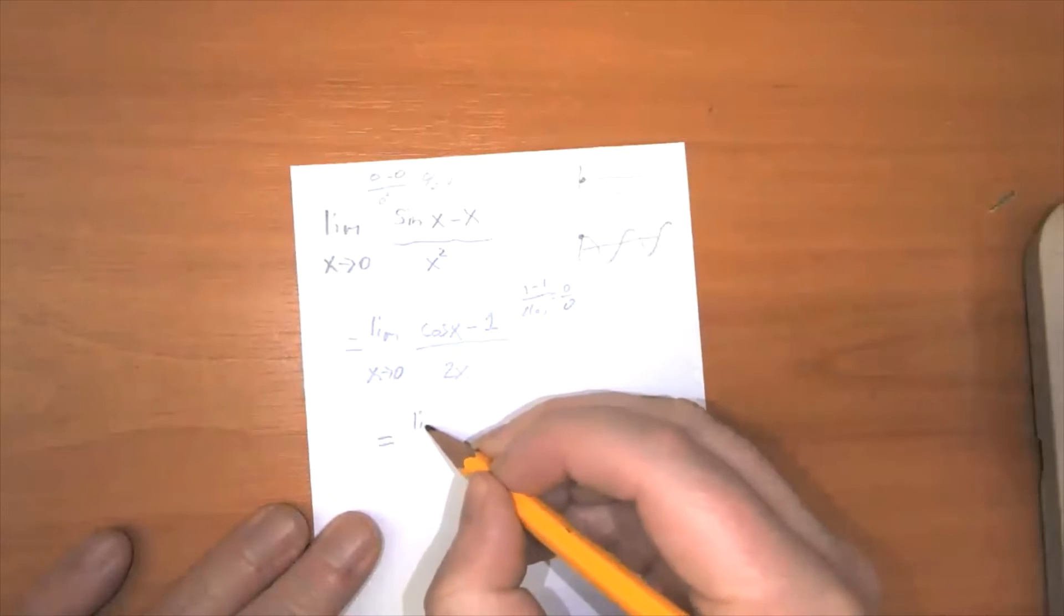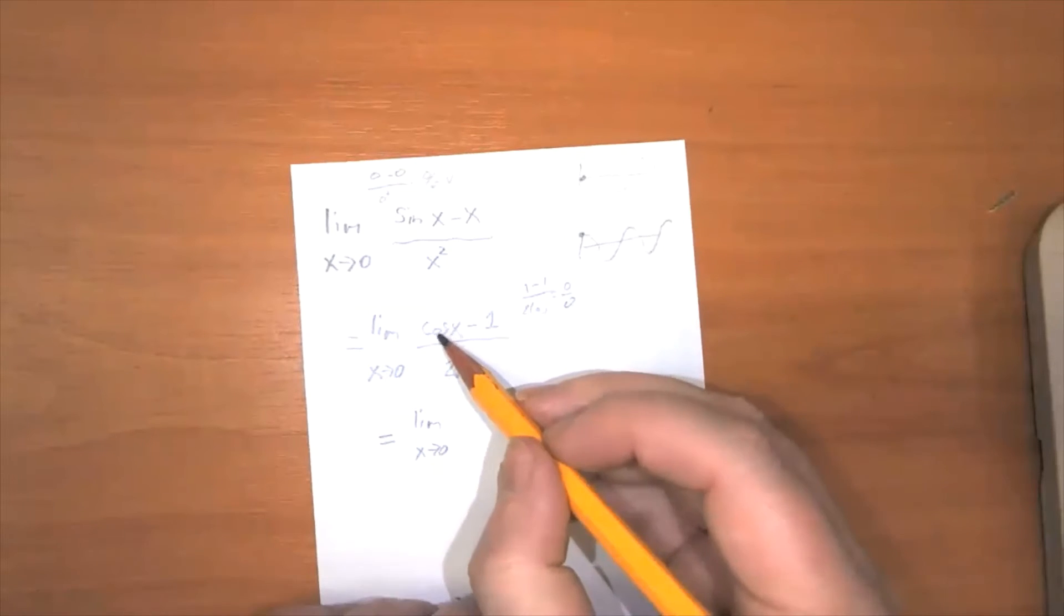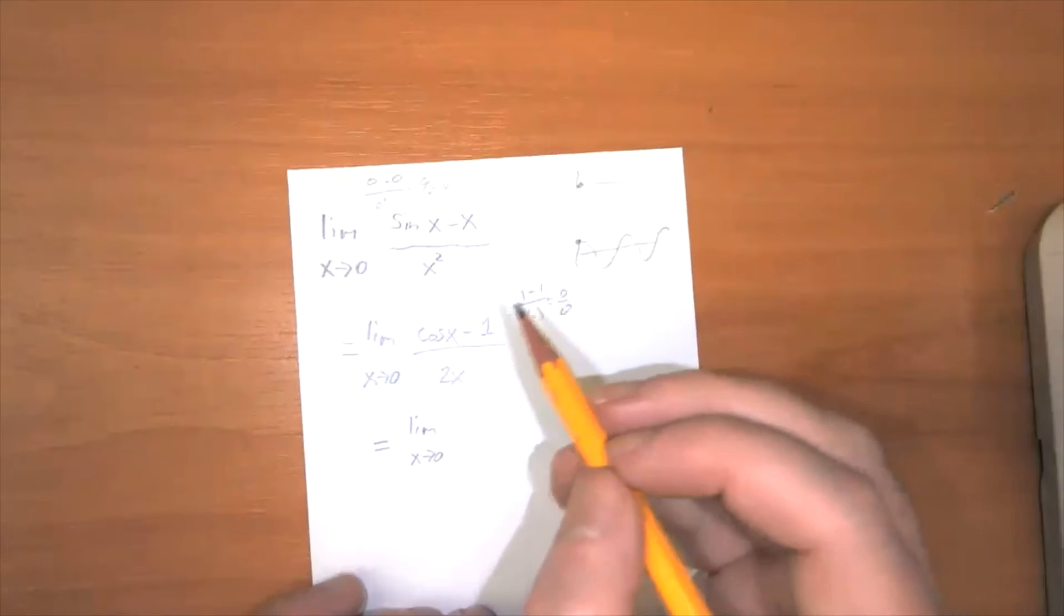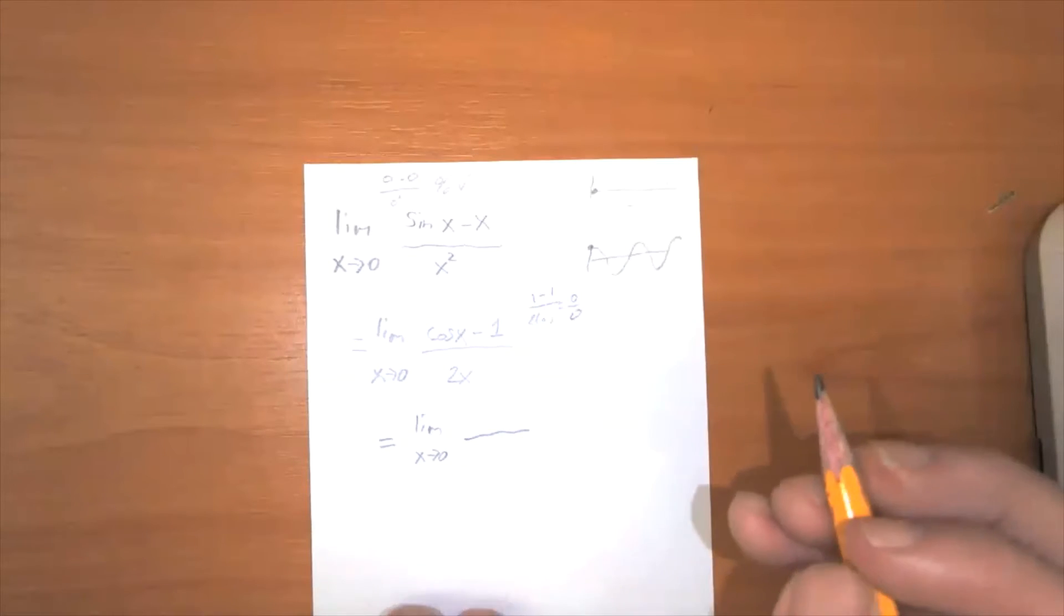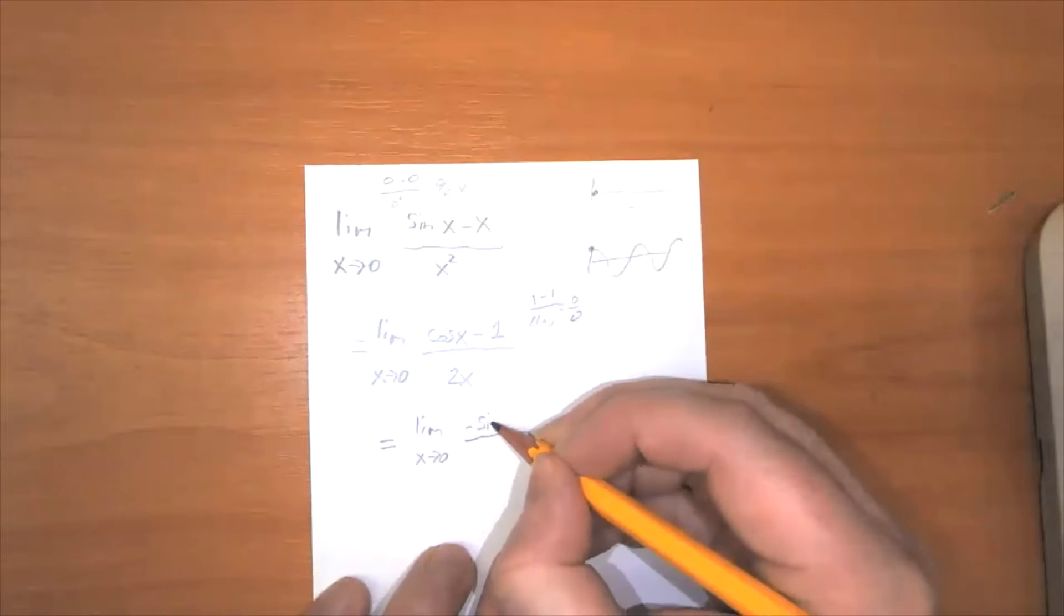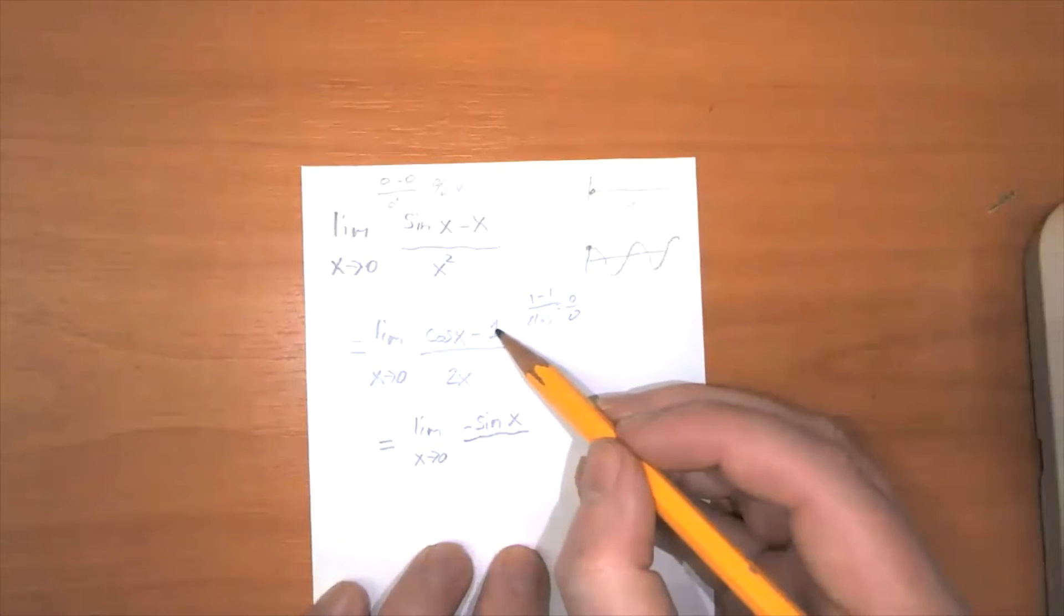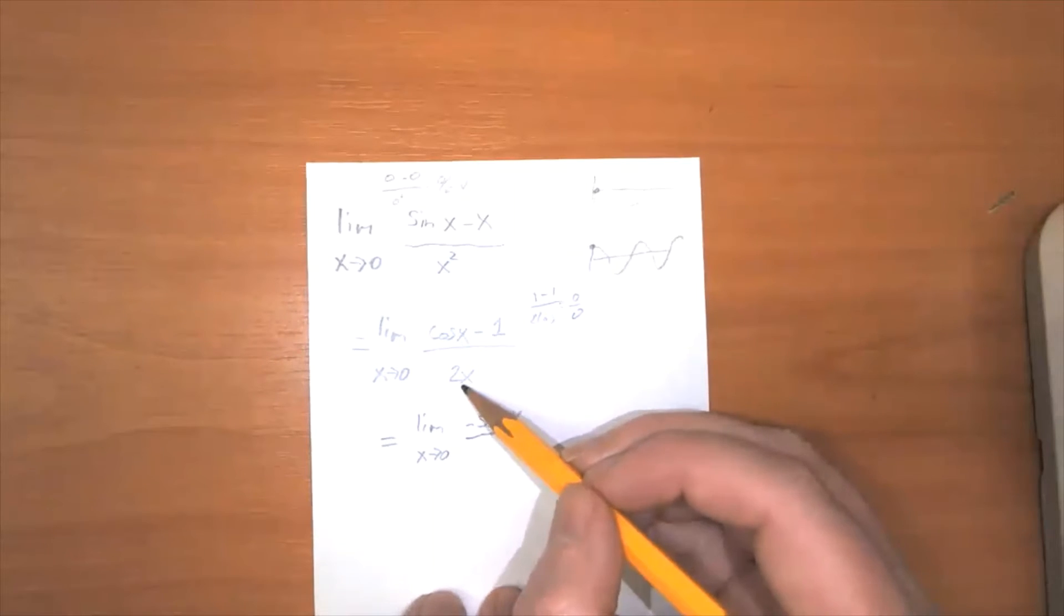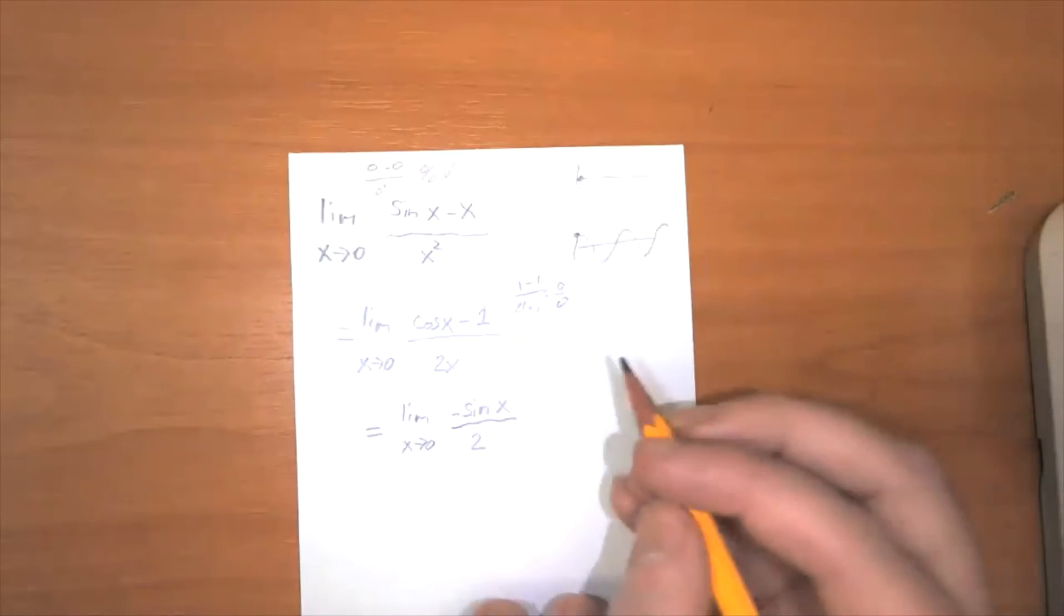So we're talking about now the limit as x approaches zero again of the derivative of cosine of x minus one. What's the derivative of cosine of x minus one? Well, the derivative of cosine is negative sine. This is a constant, so it just goes away. And this is a linear term, so the derivative of 2x is just two.